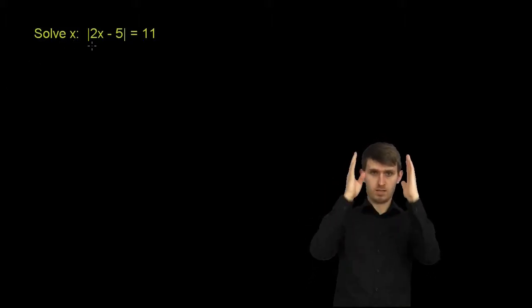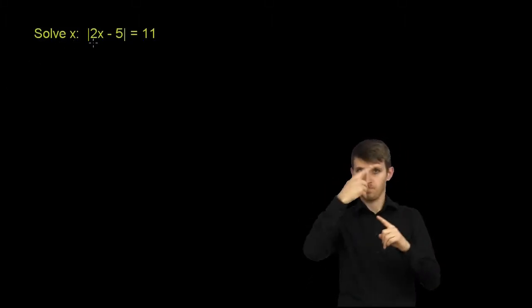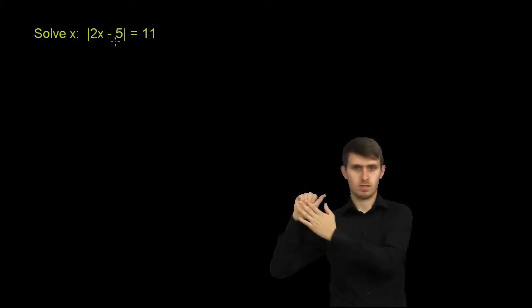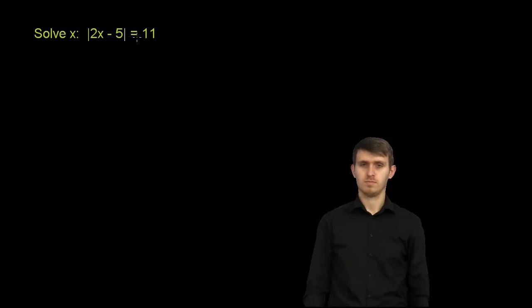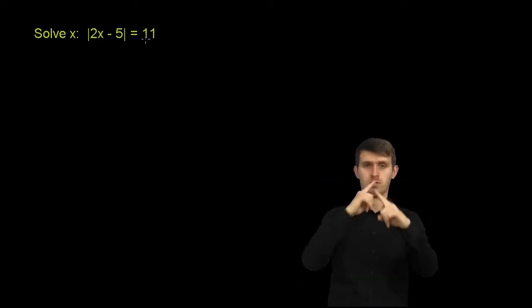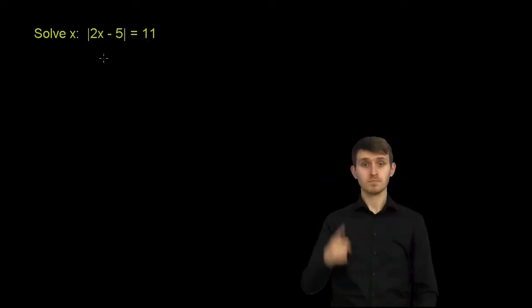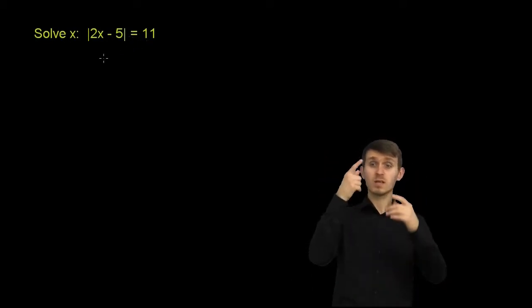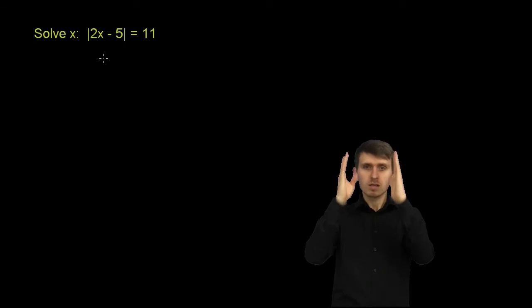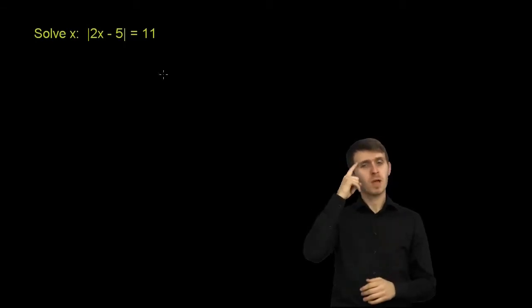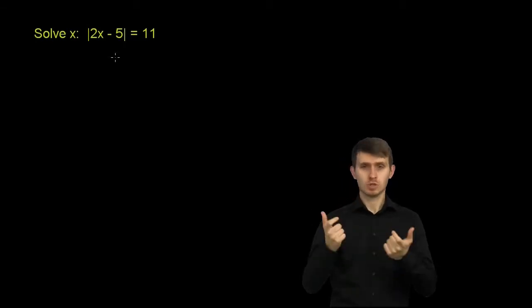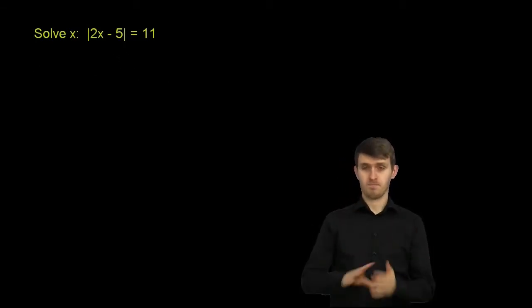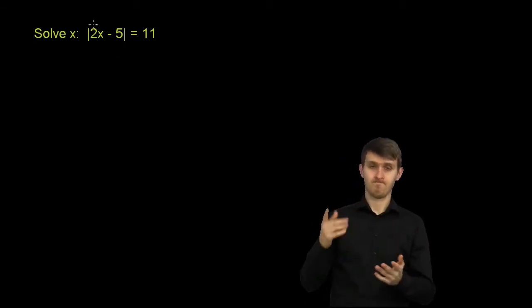Solve for x. We have the absolute value of 2x minus 5 is equal to 11. The big insight you need to have whenever you have an absolute value equation like this is just to remember: